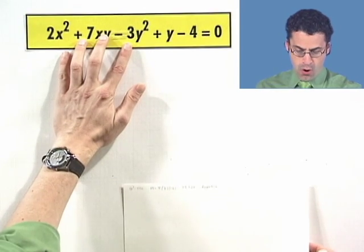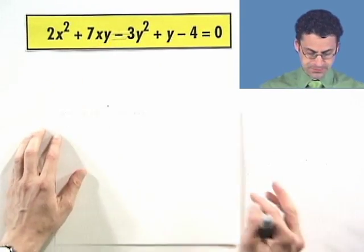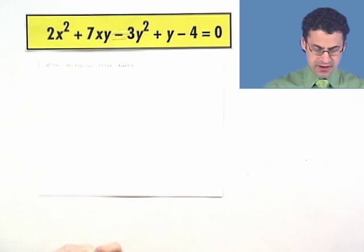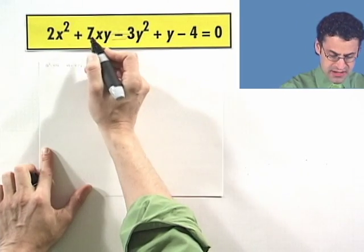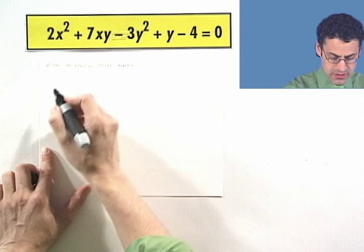Wow. So you can identify them even when they look really exotic. Let's take a look at another one, just to warm up. Let's figure out b squared minus 4ac here. So b squared is going to be 7 squared, which is 49.